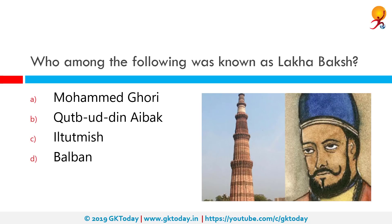Who among the following was known as Lakhabaksh? The correct answer is Qutubuddin Aibak. He was a general of Ghurid emperor Muizuddin. He was in charge of Ghurid territories in northern India, and after Muizuddin's death became the ruler of an independent kingdom that evolved into the Delhi Sultanate, ruled by the Mamluk dynasty.